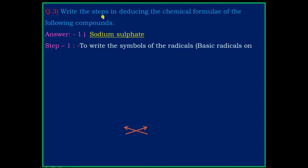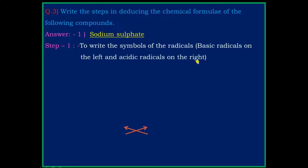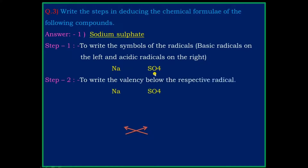Write the steps in deducing the chemical formula of the following compounds. Question 1: Sodium Sulphate. Step 1: write the symbol of the radical — basic radical on the left and the acidic radical on the right. The basic radical is sodium and the acidic radical is sulphate.